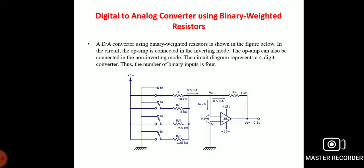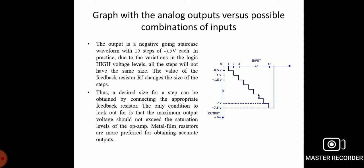This overall current is converted to a proportional output voltage. The output will be maximum when all switches are closed. The output voltage equation is: Vout = −Rf × (B0/R + B1/2R + B2/4R + B3/8R), where each of the inputs B3, B2, B1, B0 may be either high (5 V) or low (0 V). The graph of analog output versus all possible input combinations shows a negative-going staircase waveform with 15 steps down to −5 V.